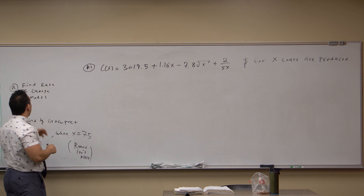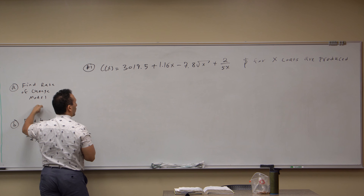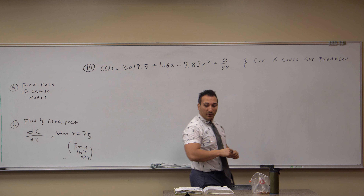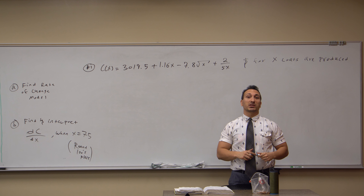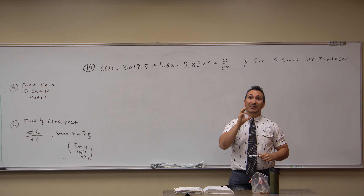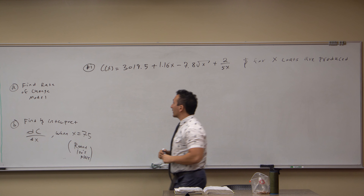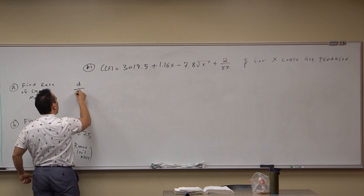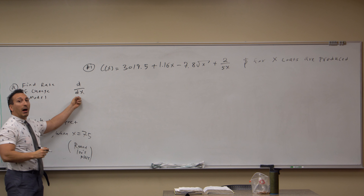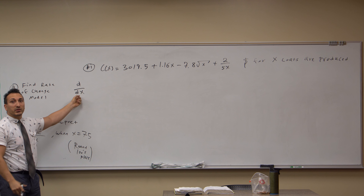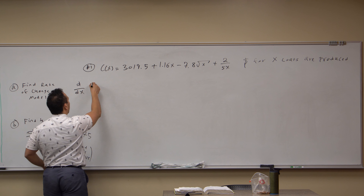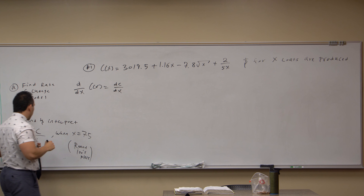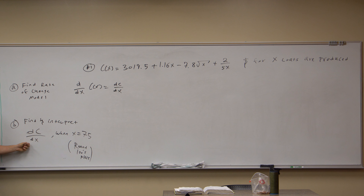The question asks us to find the rate of change model. This is C(X) and we want to find the rate of change DC/DX. The D/DX is called the differential operator — it just means take the derivative of your function C(X), which gives us DC/DX.